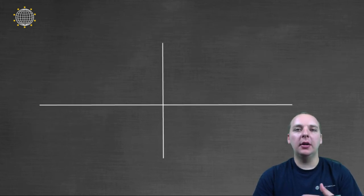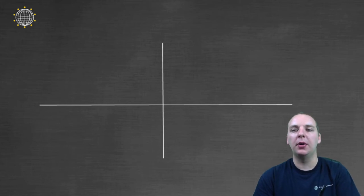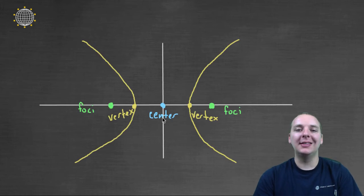Now let's pull out a couple of the vocabulary words that are going to be important when you talk about hyperbolas. Some of these you already know. So every hyperbola has a center, every hyperbola has two foci, and every hyperbola has two vertices. So you have a vertex between each foci and the center.